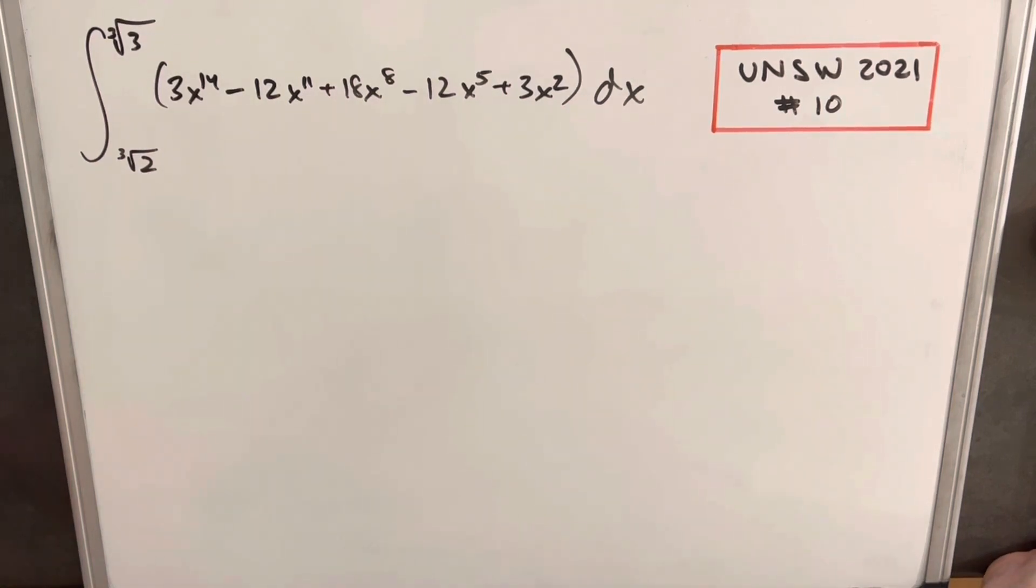Hey, we have another integral here today from UNSW 2021, problem 10. We have an integral from the cube root of 2 to the cube root of 3: 3x to the 14th minus 12x to the 11th plus 18x to the 8th minus 12x to the 5th plus 3x squared dx.